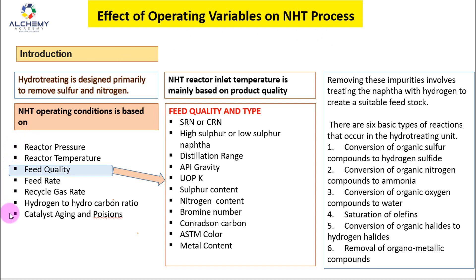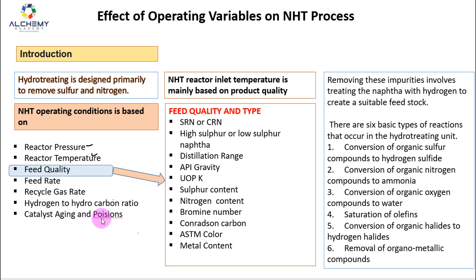These are the operating variables that determine how much pressure or temperature we need to keep on the NHT reactor in order to get proper hydrotreating. The parameters are: reactor pressure, reactor temperature, feed quality, feed rate, recycle gas rate, hydrogen to hydrocarbon ratio, and catalyst aging and poisons.